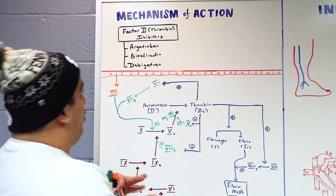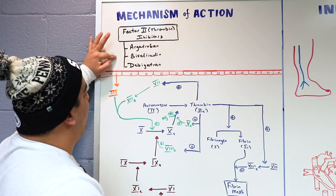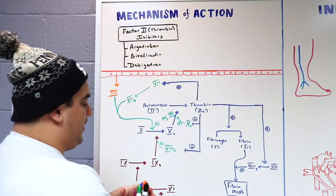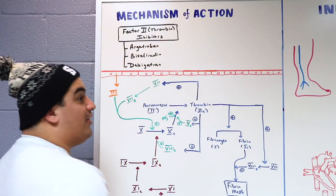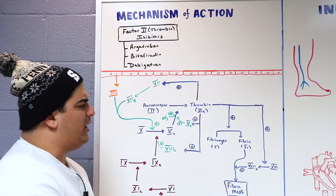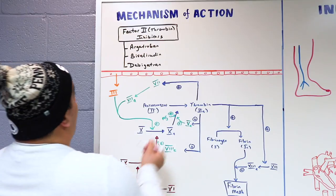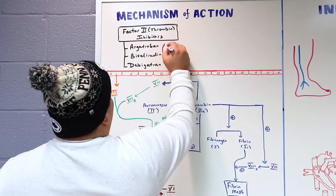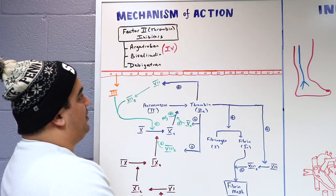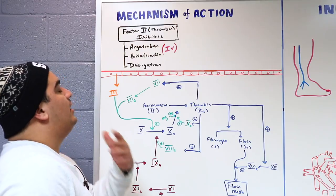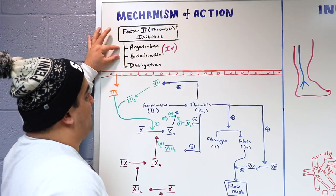Argatroban and bivalirudin are good alternatives for patients who have a severe reaction to heparin — such as a serious allergic reaction or heparin-induced thrombocytopenia. These can be given IV. Both unfractionated heparin and low molecular weight heparin can cause heparin-induced thrombocytopenia, so these medications serve as alternatives.